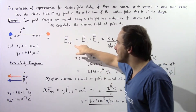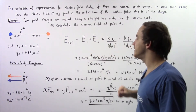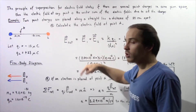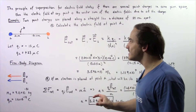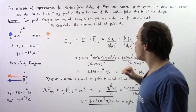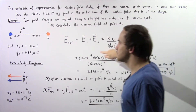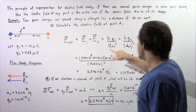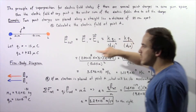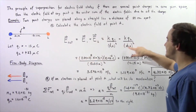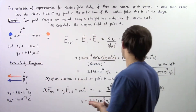Choosing the rightward direction as positive along the x-axis, the net electric field equals E1 plus E2 since they point in the same direction. The formula for electric field is K multiplied by the charge divided by the distance squared. So E1 equals K times Q1 divided by the distance from A to charge one, squared.